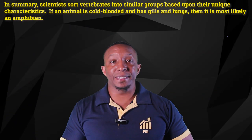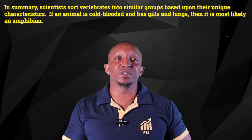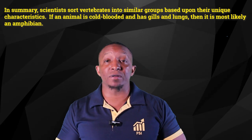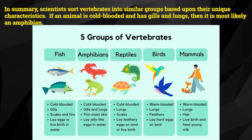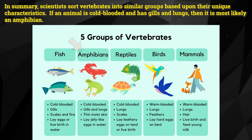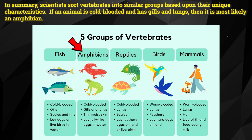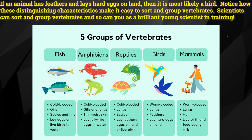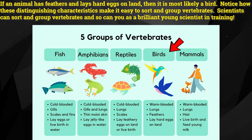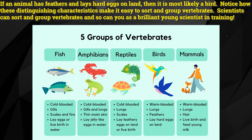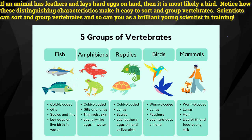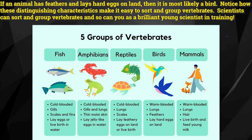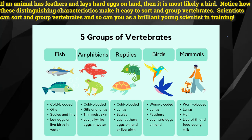In summary, scientists sort vertebrates into similar groups based upon their unique characteristics. If an animal is cold-blooded and has gills and lungs, then it is most likely an amphibian. If an animal has feathers and lays hard eggs on land, then it is most likely a bird. Notice how these distinguishing characteristics make it easy to sort and group vertebrates. Scientists can sort and group vertebrates, and so can you as a brilliant young scientist in training.